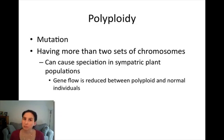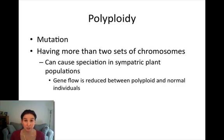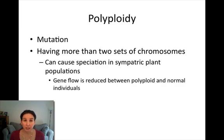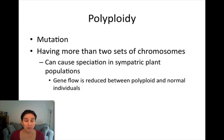Polyploidy is a mutation. Remember when we discussed meiosis and talked about non-disjunction events and mistakes that can happen in the production of gametes — well, that's what polyploidy is. Polyploidy is a non-disjunction event, either in mitosis or meiosis, and it results in cells or gametes that have more chromosomes — double the number they should have.